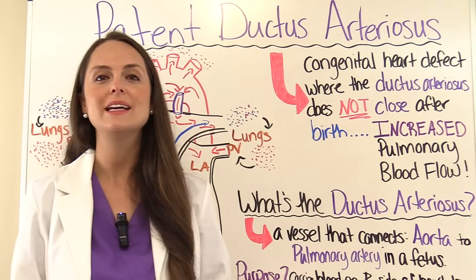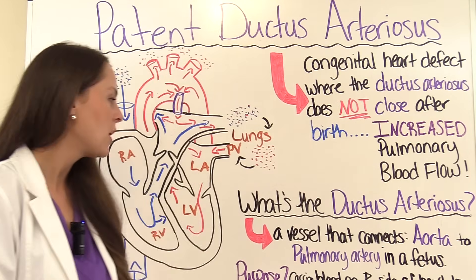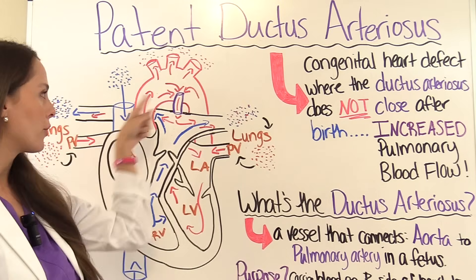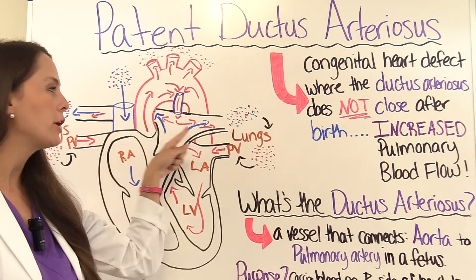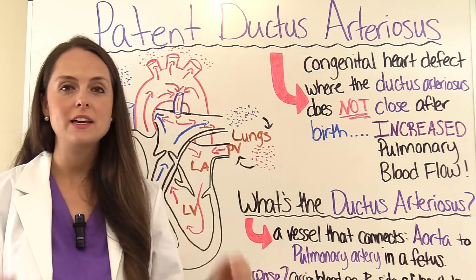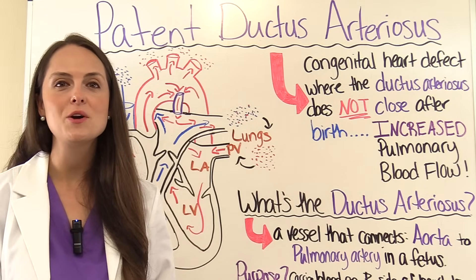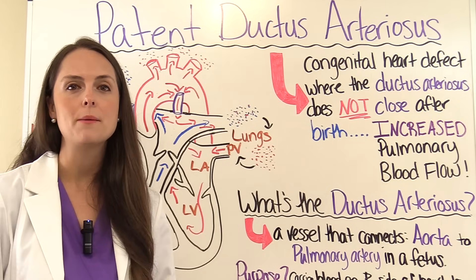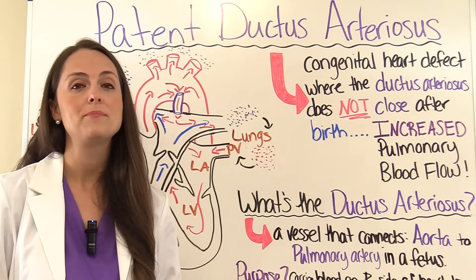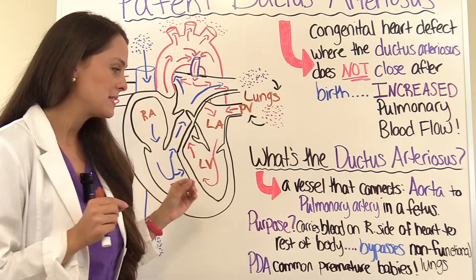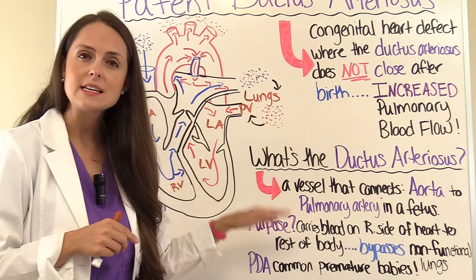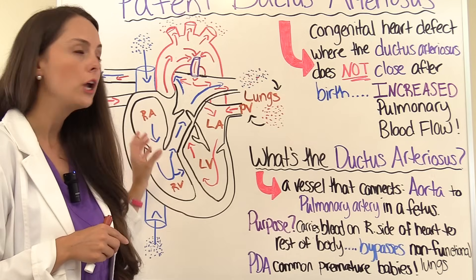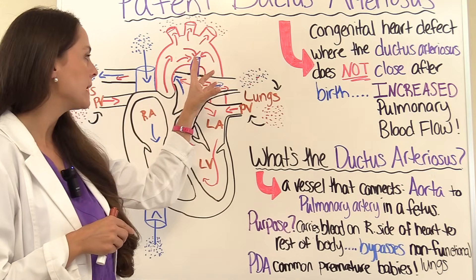What is the ductus arteriosus? It is a vessel that connects the aorta to the pulmonary artery in a fetus. A baby in the womb needs this structure — it's very important for their circulation — but as adults we don't need it. What it does is carry blood that's on the right side of that fetus's heart to the rest of the body.